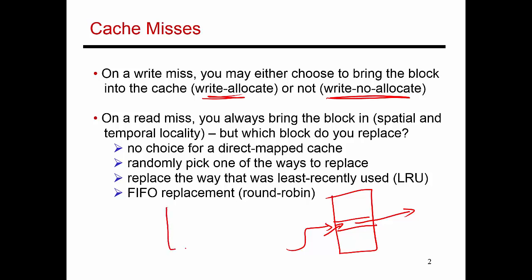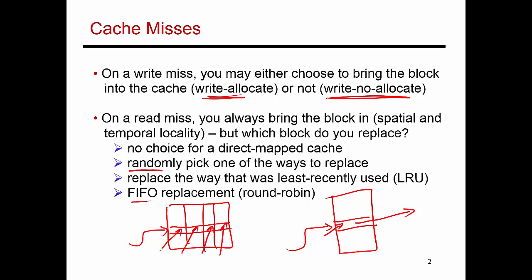If you assume a set associative cache — say a four-way set associative cache — every address maps to a unique set, and in that set you have four different blocks. Now you have choices in terms of what to evict to make room for the new block. A random policy simply evicts a block at random. A second option is a FIFO replacement policy, which is essentially a round-robin: the first block in goes to way one, the next to way two, then three, then four, then you rotate back to the start.